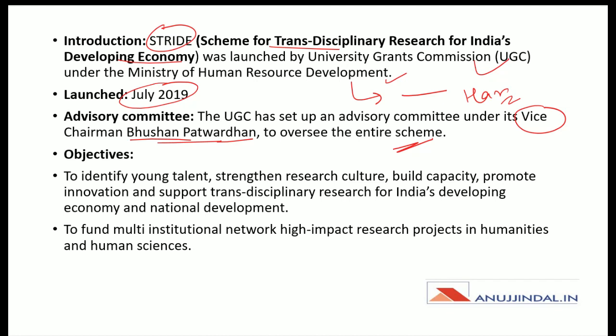Now, what are the objectives of the scheme? To identify young talent, strengthen research culture, build capacity, promote innovation, and support transdisciplinary research for India's developing economy and national development. The main aim is to develop research culture in universities and institutions in our economy, and to find multi-institutional network high-impact research projects in humanities and human sciences.